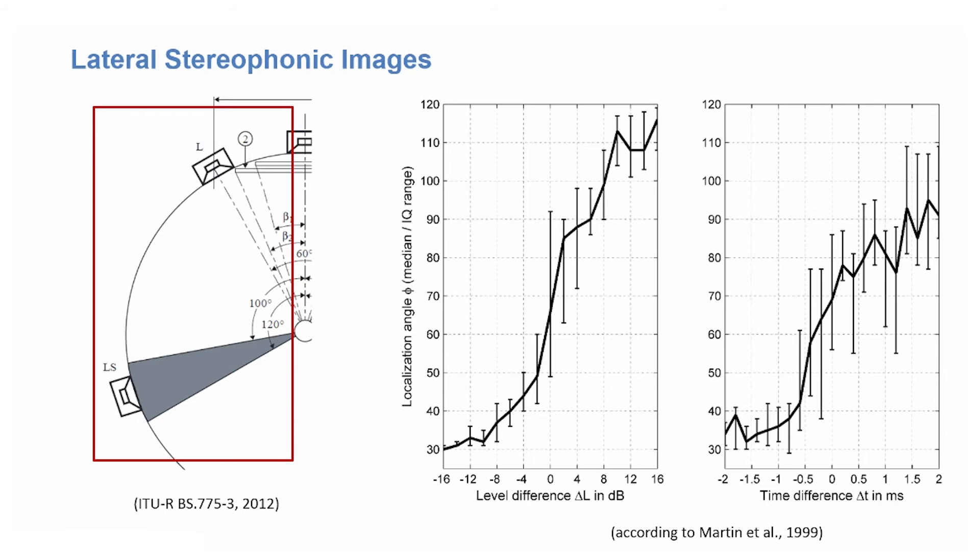Here you see a quite non-linear curve. For a gradual transition, the curve should look like the dashed curve that you see here. Instead, the localization jumps from front to back within only some dB of level difference, and with large inter-individual differences, as you can see at the error bars. It is even worse with time differences where you get a quite erratic behavior with a very unstable localization. And that is why lateral loudspeakers are usually not used to produce phantom sources.